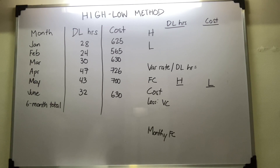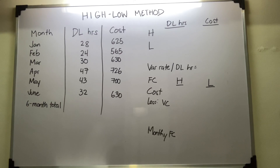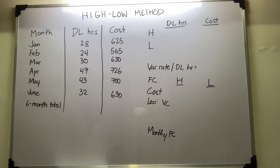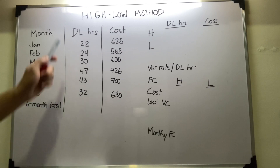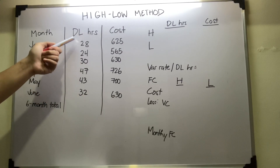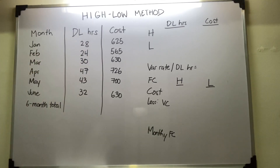The high-low method requires that you select the highest and lowest levels of activity — that would be your driving factor. For this example, we need to identify the column for activity. The activity level column would be your direct labor hours, not the cost column.